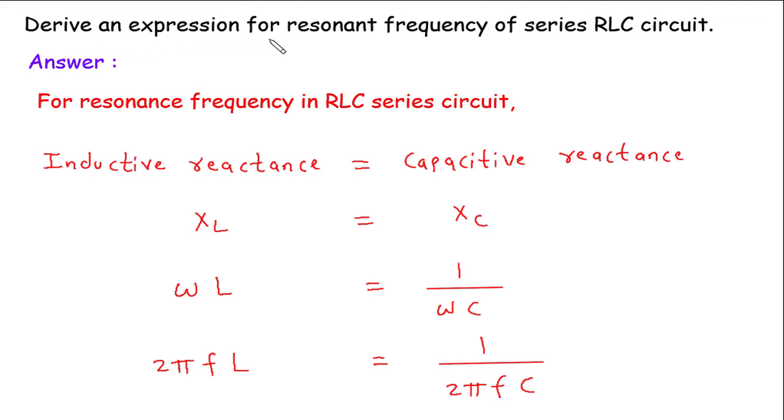Derive an expression for resonant frequency of series RLC circuit. For resonance frequency in RLC series circuit, inductive reactance is equal to capacitive reactance. Inductive reactance is denoted by XL and capacitive reactance is denoted by XC. Now for resonance frequency in RLC series circuit, XL should be equal to XC.